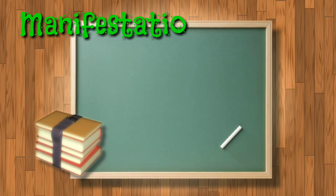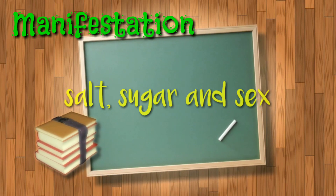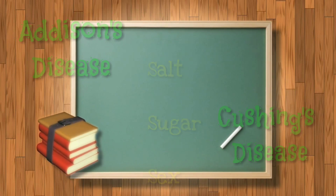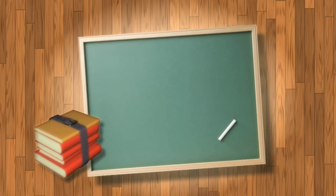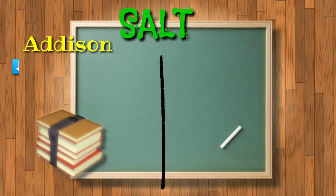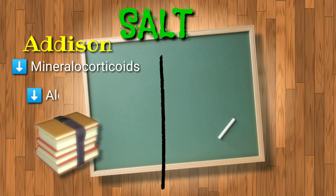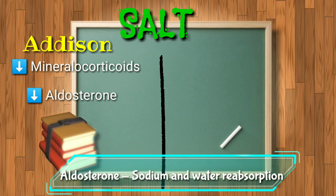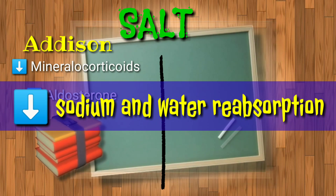Now to know their manifestations, let's base them on the three S's — salt, sugar, and sex. For Addison's disease, all of them are decreased. Starting with the first S, salt: in Addison's, there is a decrease in mineralocorticoids, which results in decreased aldosterone. The function of aldosterone is sodium and water reabsorption, so because of decreased aldosterone, there will also be a decrease in sodium and water reabsorption.